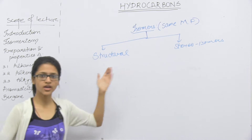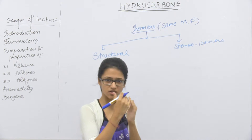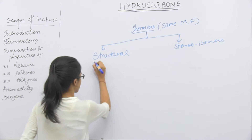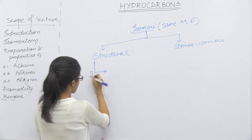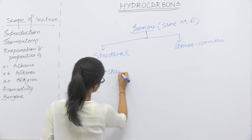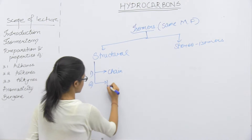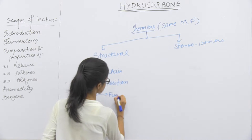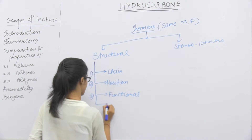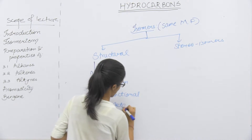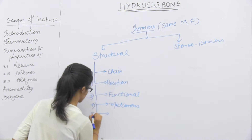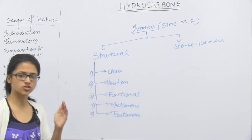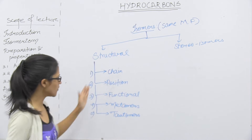In structural isomers, the atoms are arranged in different orientations. We will classify them: first is chain isomers, second is position isomers, third is functional isomers, fourth is metamers, and fifth is tautomers. We will discuss them one by one.